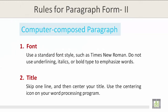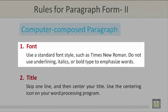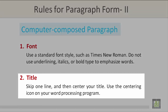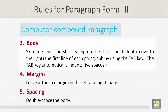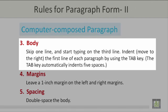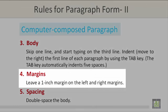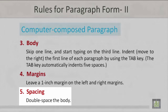Computer-composed paragraph — rules for paragraph form, Part 2. Number 1 is font: Use a standard font style such as Times New Roman. Do not use underlining, italics, or bold type to emphasize words. Number 2 is title: Skip one line and then center your title using the centering icon on your word processing program. Number 3 is body: Skip one line and start typing on the third line. Indent — move to the right — the first line of each paragraph by using the tab key. The tab key automatically indents five spaces. Number 4, Margins: Leave a one inch margin on the left and right margins. Number 5, Spacing: Double space the body.